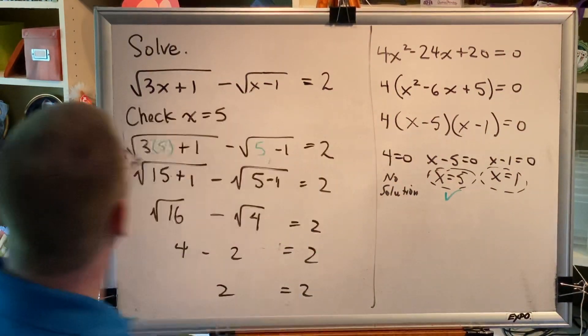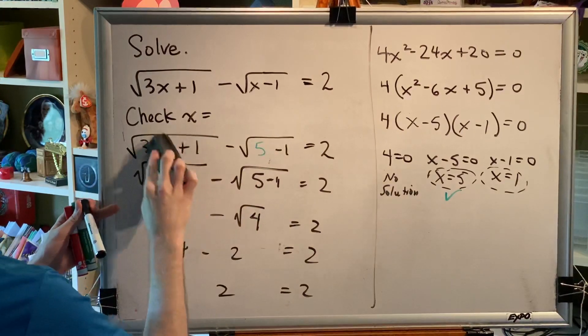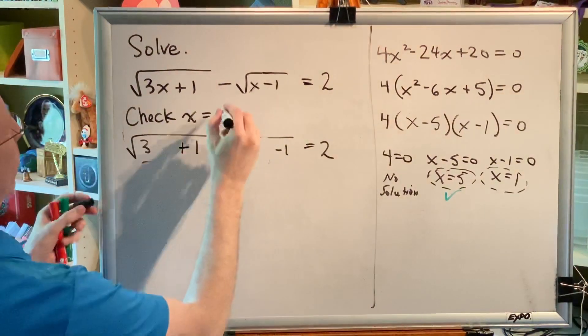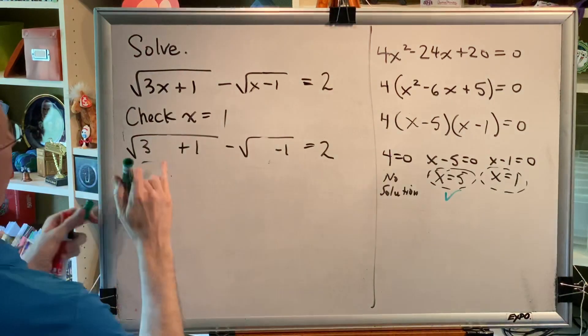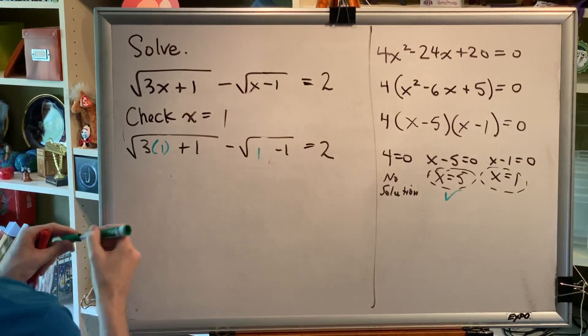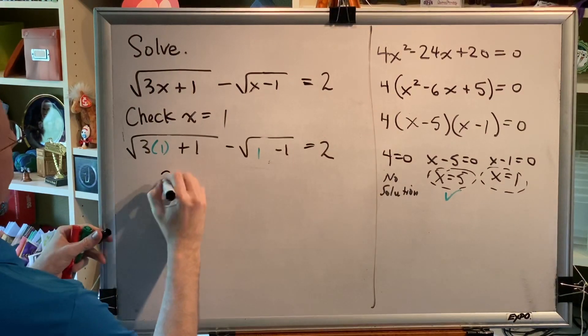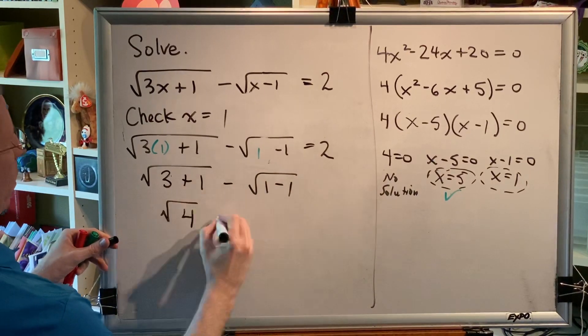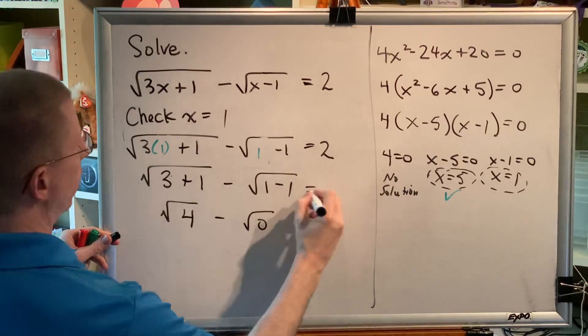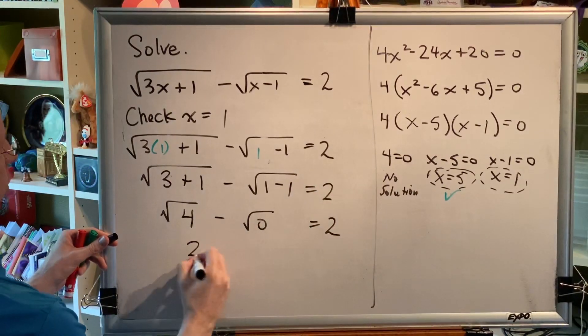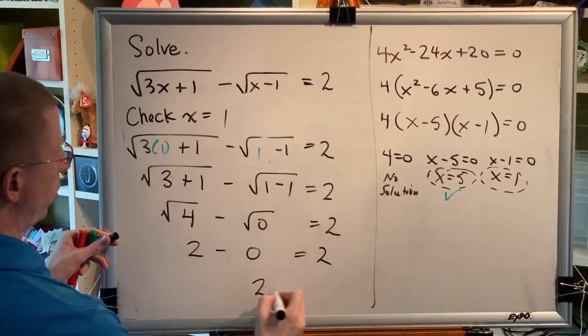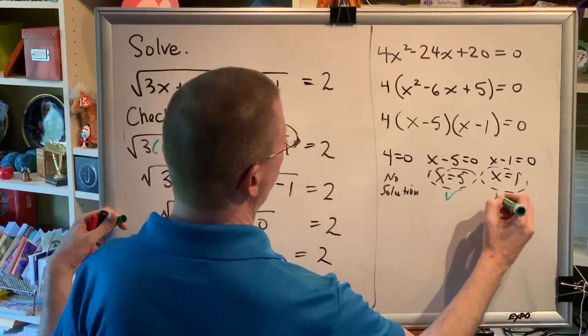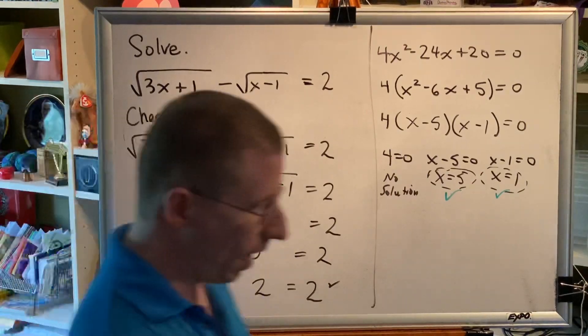Now we have to check 1. So everywhere we see an x in our original equation, we're going to put 1. And we will simplify. 3 times 1 is 3. 3 plus 1 is 4. 1 minus 1 is 0. The square root of 4 is 2. The square root of 0 is 0. 2 minus 0 is 2. So we get 2 equals 2. It appears that for this problem, there are two correct answers. x equals 1 and x equals 5.